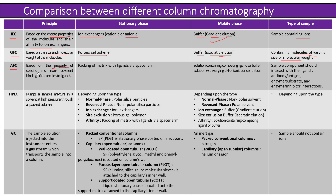Affinity chromatography is based on the property of specific and non-covalent binding of molecules to ligands. The stationary phase includes packing of matrix with ligands via a spacer arm. The mobile phase includes a solution containing competing ligand or buffer solution with varying pH or ionic concentration that weakens the interaction between the target molecule and the ligand. The sample for affinity chromatography should contain components that interact with the ligand, such as antibody-antigen interaction, enzyme-substrate interaction, and enzyme-inhibitor interactions.